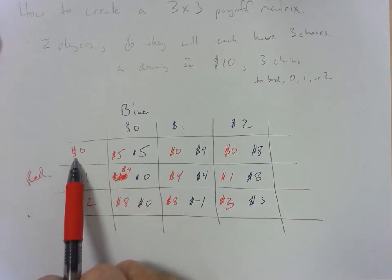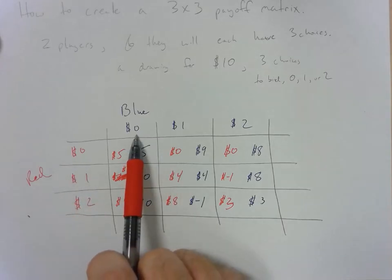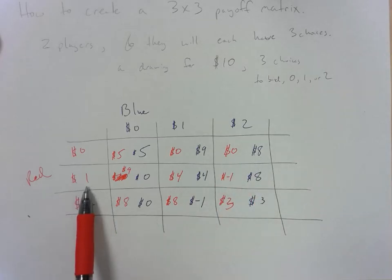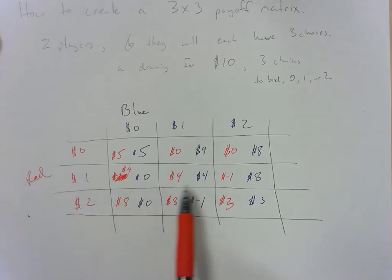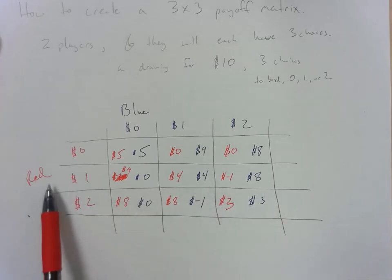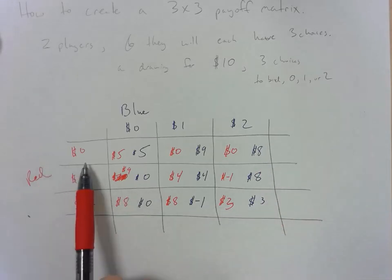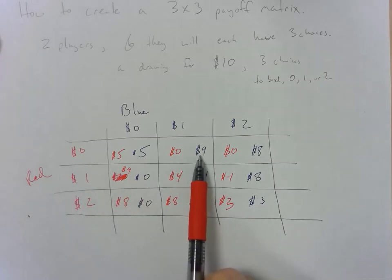If the red player chooses to bid 0 then the blue player has a choice between getting 5, 9, or 8. If the red person bids 1 dollar they have a choice between 0, 4, and 8. And if red ends up bidding 2 they have a choice between 0, negative 1, and 3. So if the red person bids 1 or 2, blue is going to choose 2. If the red person bids 0 they'll choose to bid 1. So it's not a dominant strategy but most likely they're going to end up choosing 2 dollars.